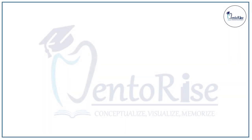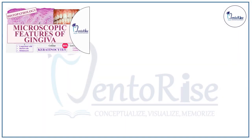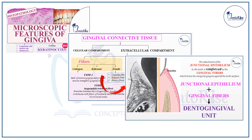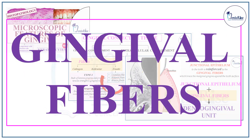In our series of videos on periodontology, in our video on microscopic features of gingiva, we mentioned something about the gingival fibers which form a part of the connective tissue. These gingival fibers combined with the junctional epithelium form the dental gingival unit. In this video, we will be elaborating in detail about what gingival fibers are, the types of gingival fibers, and the attachment and function of each gingival fiber in detail.